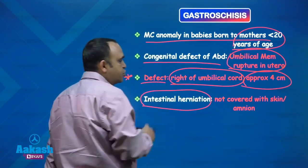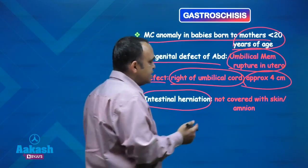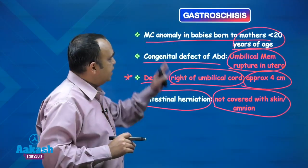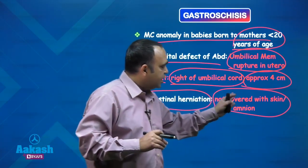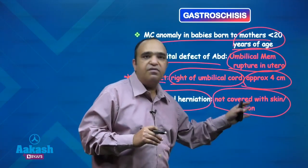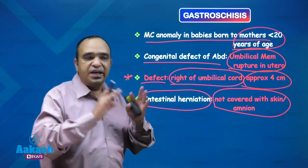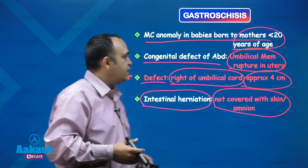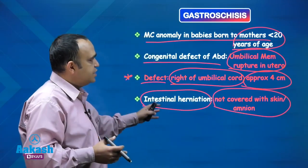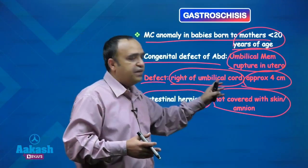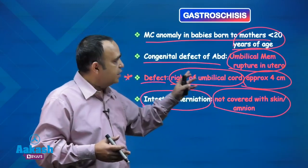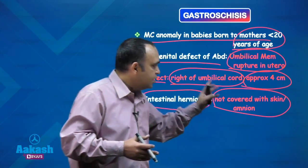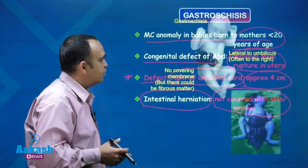The bowel is the most common organ that herniates in gastroschisis — another point of difference with omphalocele. In gastroschisis, the herniated bowel is not covered with any membranous sac or skin; it is just lying open. Two points to remember: the defect is right of the umbilical cord, approximately 4 centimeters or less, and is not covered with a sac or skin.